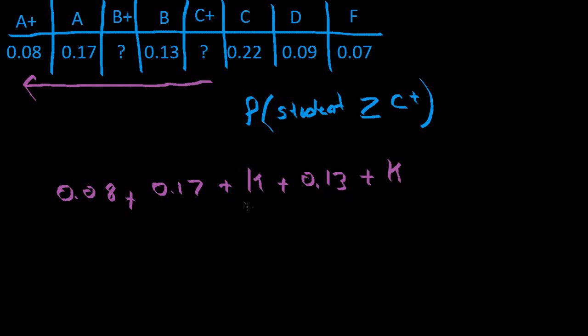But since we don't know what the K values are, and we know that the addition or the total of all of these values right here, of a probability distribution, is going to equal 1. Now using that knowledge, if we were to add all of these grades up...